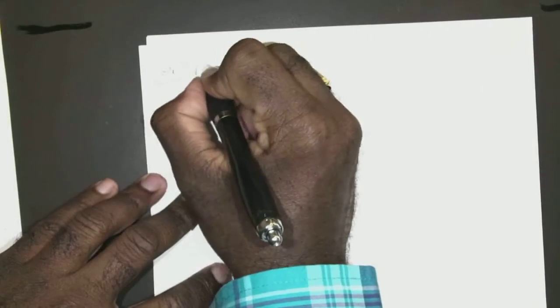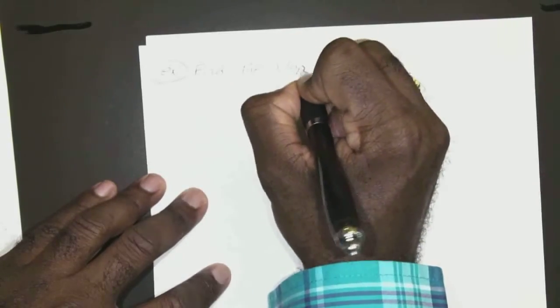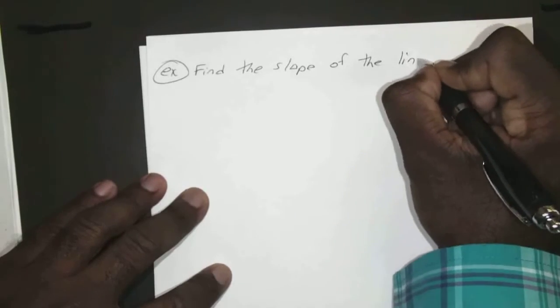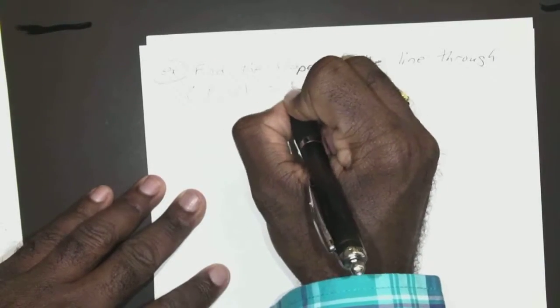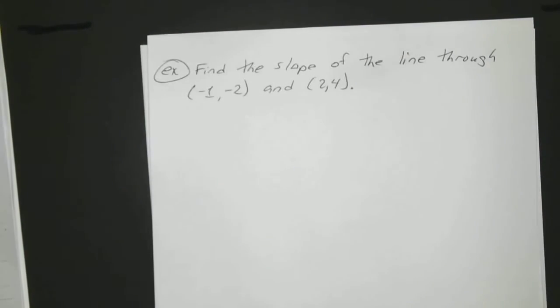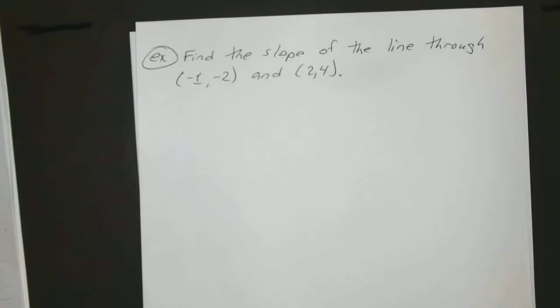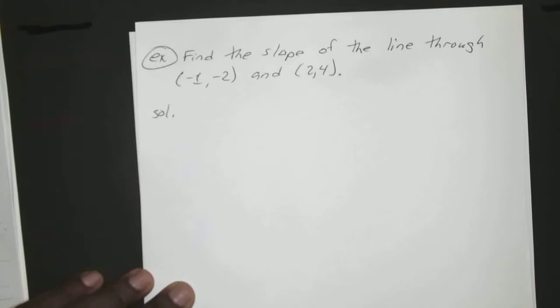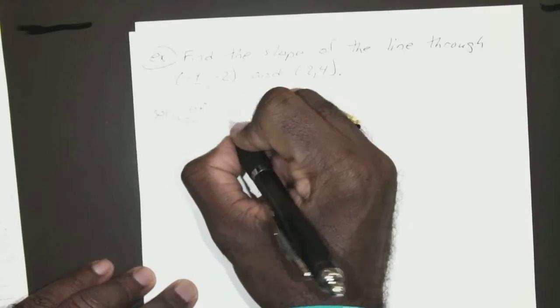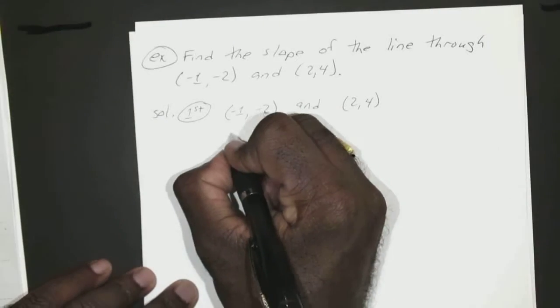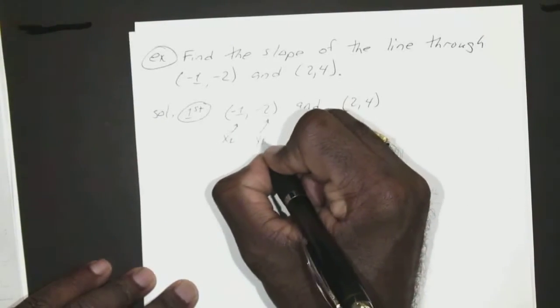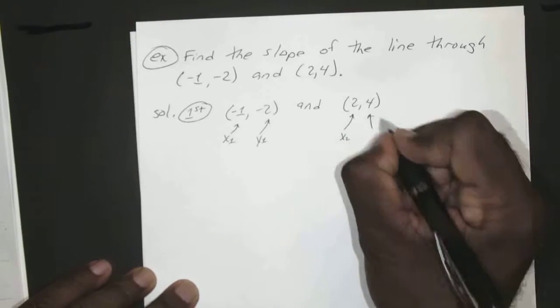Alright, we'll do one more. So you want to find the slope of the line through the points, say, negative 1, negative 2 and 2, 4. Again your first step, you just have to point one point as your x1, y1, and your other point as x2, y2. So I can make that my x1 and this my y1, make this my x2 and that one my y2.